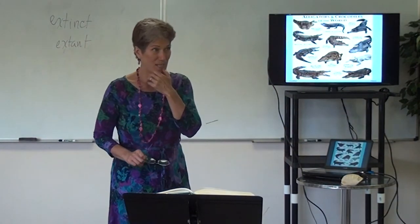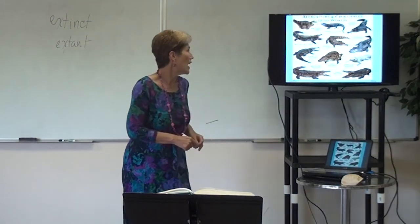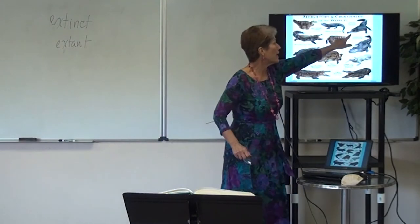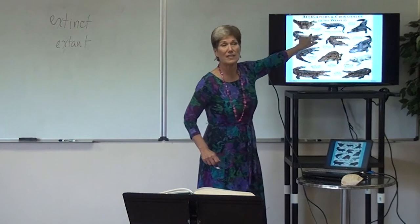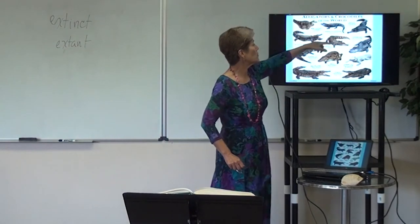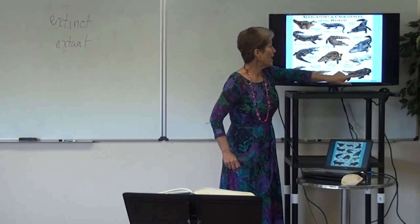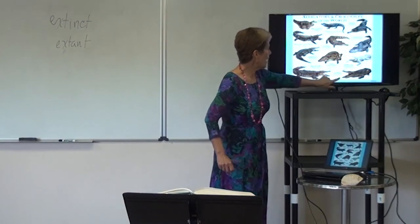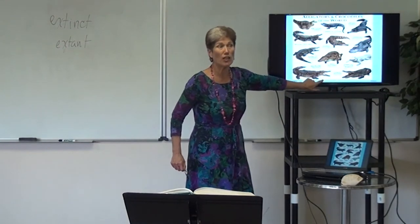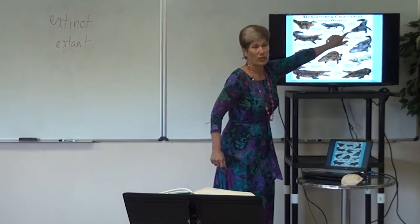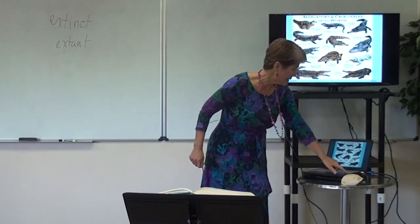Now we get to crocodilians — your alligators and crocodiles. The other types are the gharial from India and the caiman from South America. People like to make caimans into pets and turn them loose here, so they're considered invasive. We have the American alligator here and basically the saltwater crocodile, listed as the Cuban crocodile. We are the only place on planet Earth that has both alligators and crocodiles living in the same place.